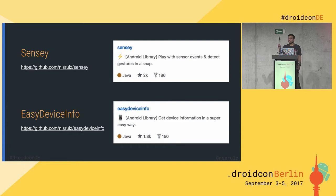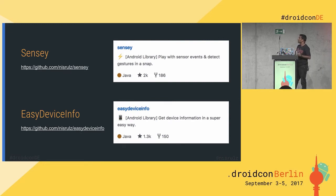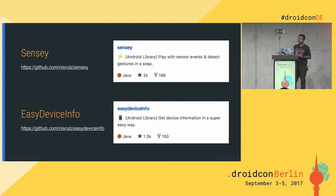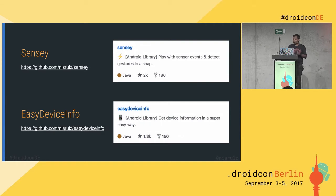Sensi makes gesture detection super simple — you just have a particular list and it tells you that a particular gesture is there. EasyDeviceInfo was basically born because I've done a lot of analytics SDK work, and that requires getting a lot of information regarding device information.